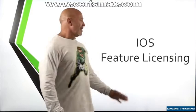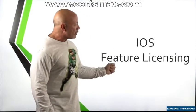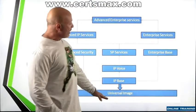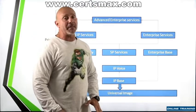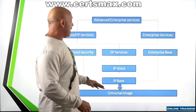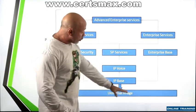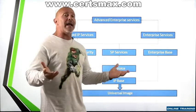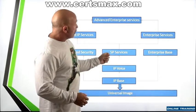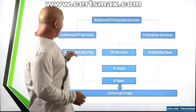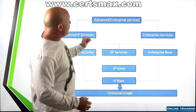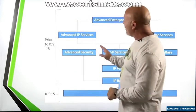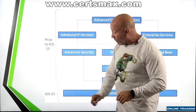Welcome back everyone. This is IOS feature licensing — very important. Every IOS has a different feature set. You have the universal image, then you have the IP base which covers the basics, then voice, service provider, enterprise base, advanced security, advanced IP services, enterprise services, and advanced enterprise services.